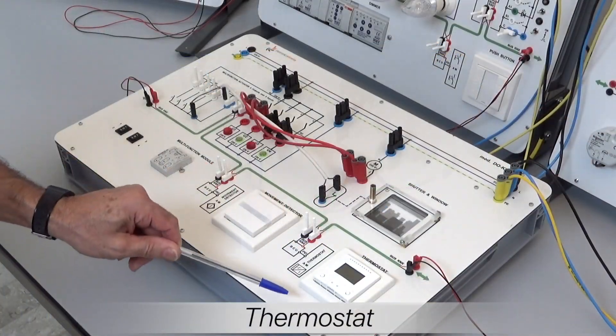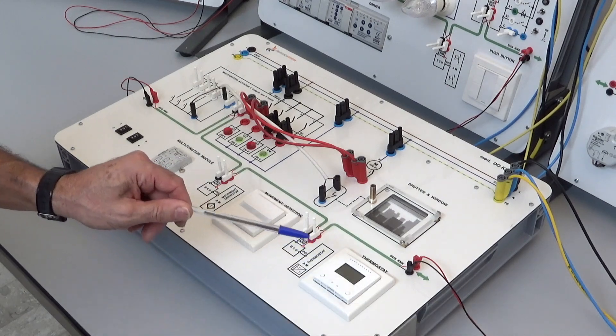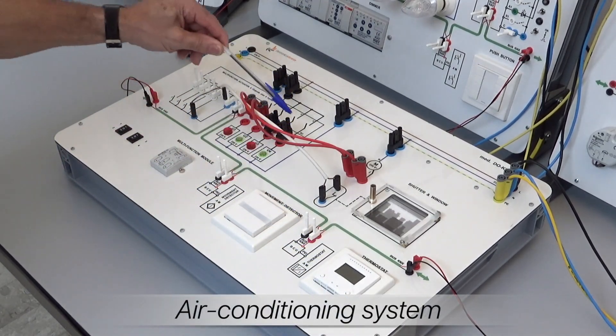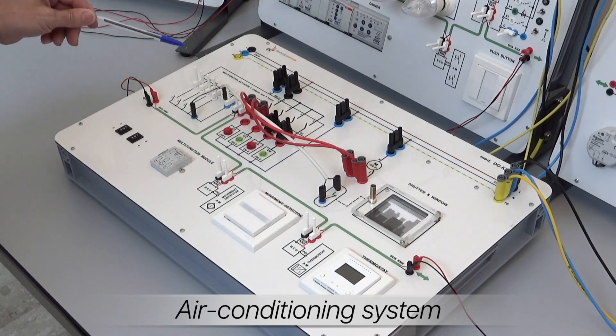The DOK2 module reproduces the operation of an air conditioning system by using some control devices such as a thermostat and an actuator.